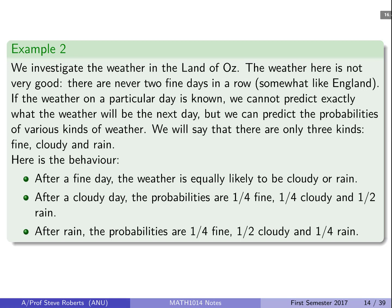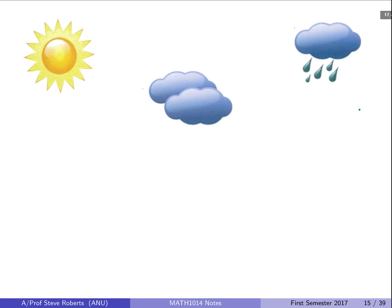Alright, so we can now try to just draw that up. So here's our diagram. So let's go with the sunny day or the fine day. We have that there's a one half chance of it becoming cloudy and a one half chance of it becoming raining and a zero chance of it actually staying fine.